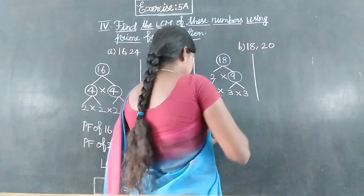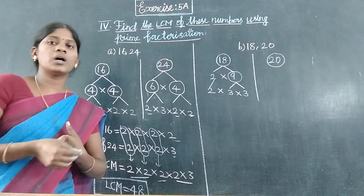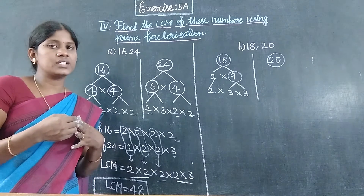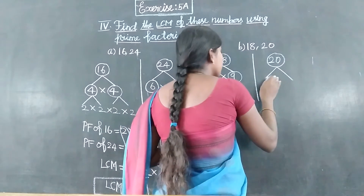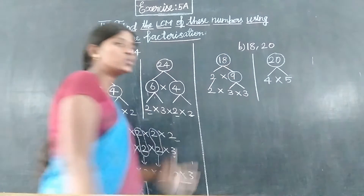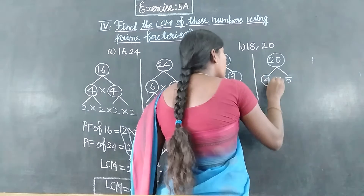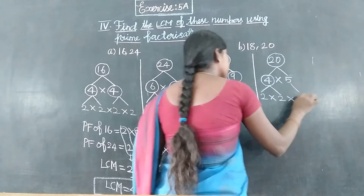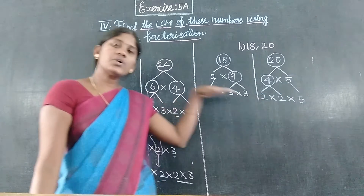Next, we factorize 20. Two tens are 20. Two is prime, but 10 is composite. We can also write 4 fives are 20. Using 2 times 10: 5 is a prime number, so we break 10 as 2 times 5. Two is also a prime number. So 20 = 2 × 2 × 5.